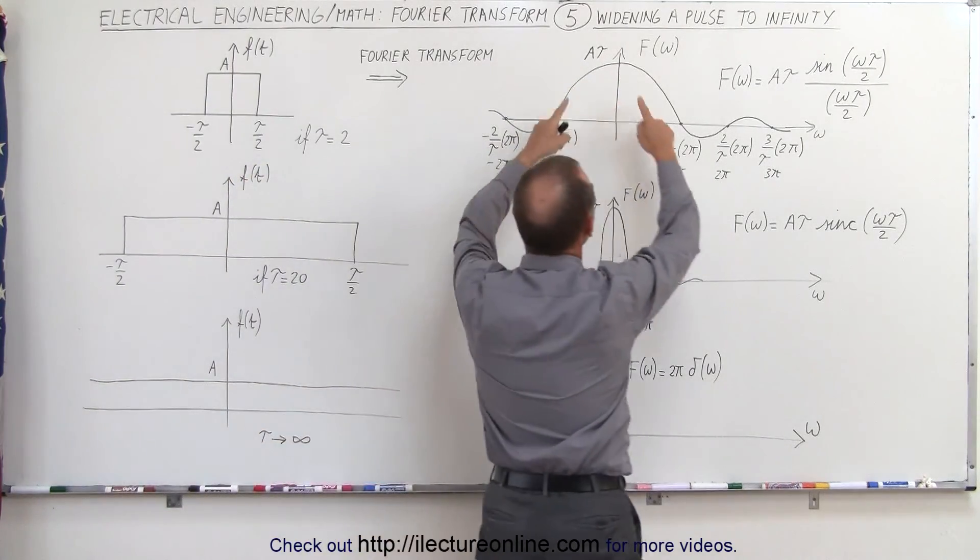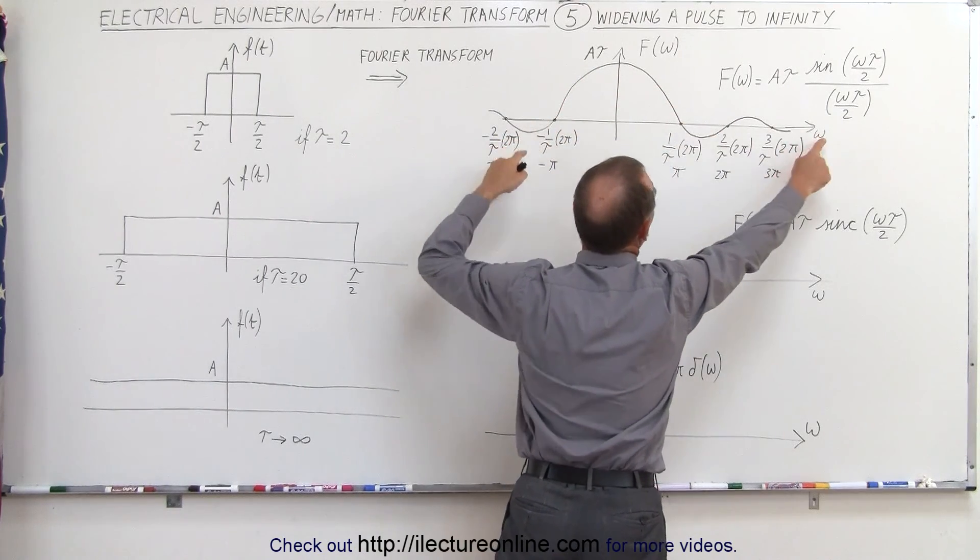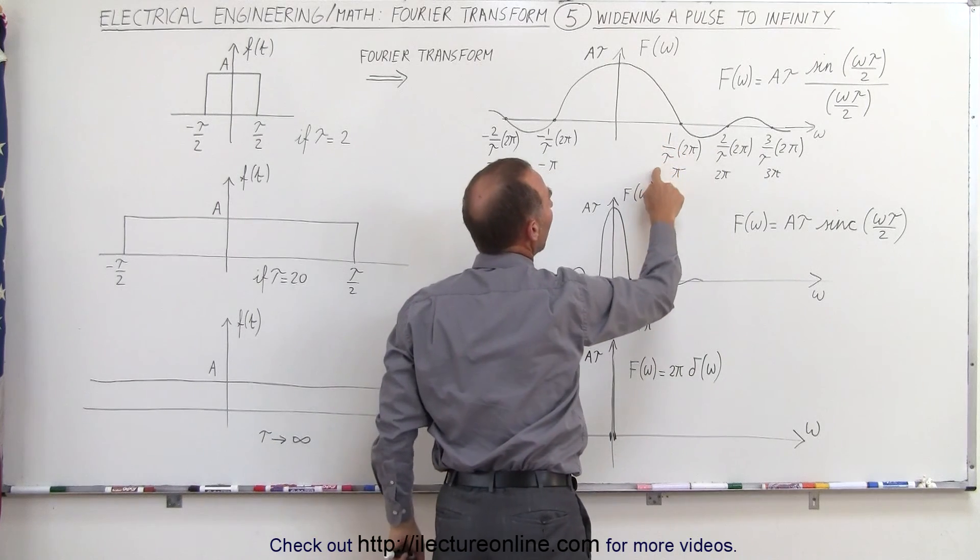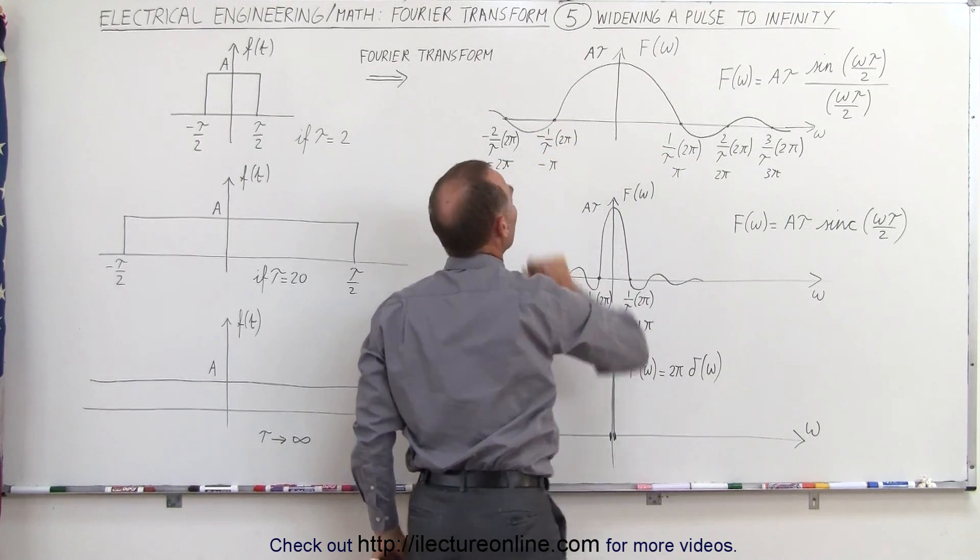Now the sinc function looks like this, and notice that the first point where it crosses over the frequency axis occurs at 1 over tau times 2 pi on the right side, and minus 1 over tau times 2 pi on the left side.